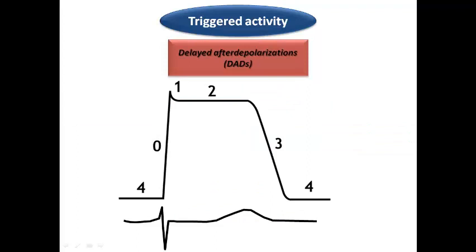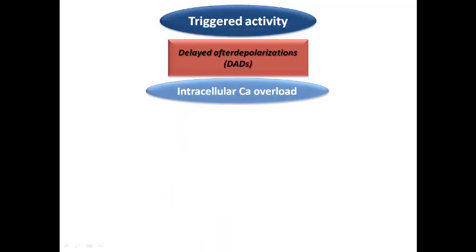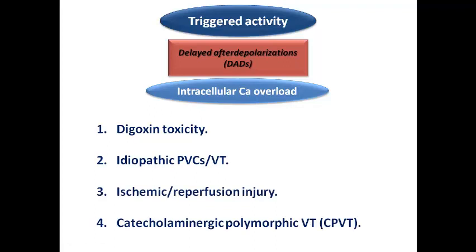The other subtype of triggered activity is delayed afterdepolarization. Here, the afterdepolarization occurs after nearly full repolarization and is mostly caused by intracellular calcium overload. This leads to a delayed afterdepolarization, usually reflected in the ECG as a wave after the T wave. The famous example for this is digoxin toxicity, since digoxin increases intracellular calcium, explaining many of the tachyarrhythmias seen in digoxin toxicity.